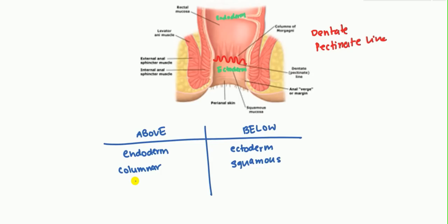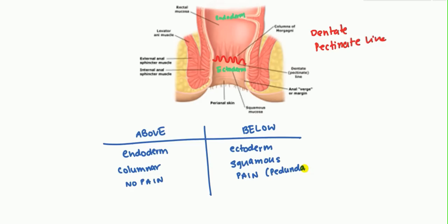Since above the pectinate line is derived from the endoderm, there isn't necessarily somatic sensation, so there is no pain above the pectinate line. However, below the pectinate line is essentially your skin, which has somatic sensation, so you will feel pain. The primary nerve involved in sensing this pain is the pudendal nerve.